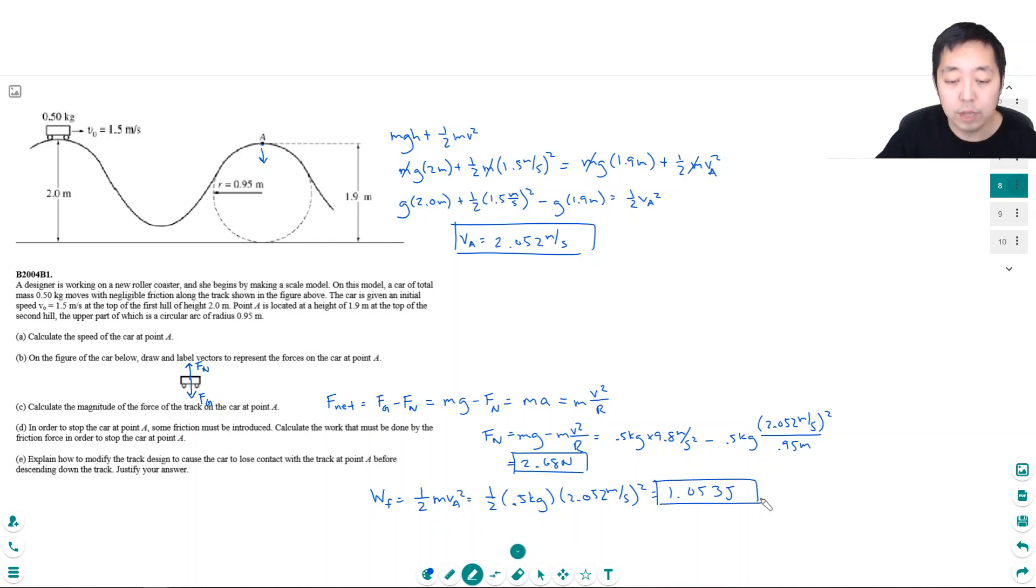So if friction does that amount of work, then by the time it reaches the top of point A it would just have enough potential energy and zero kinetic energy because all of the energy would have been removed.